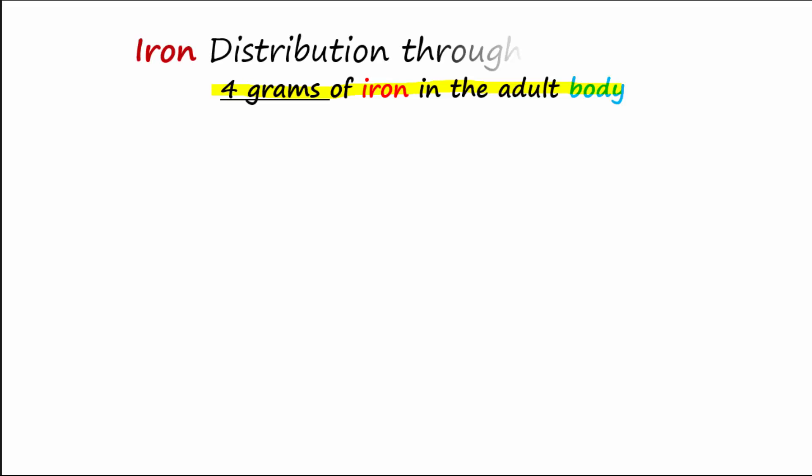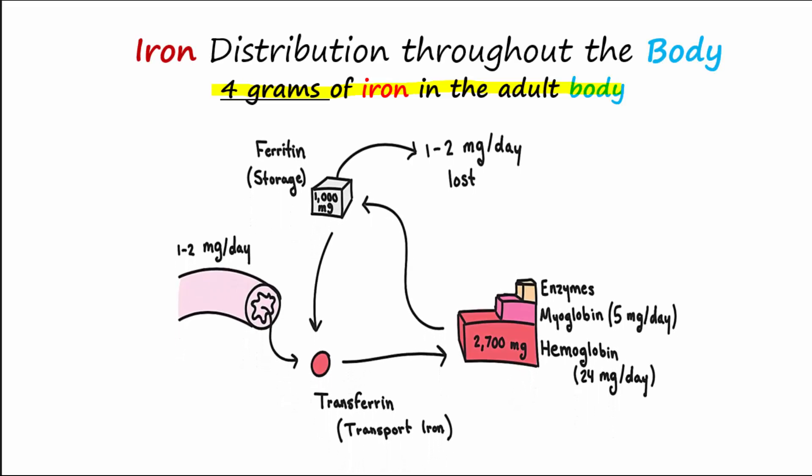At any given moment there are about four grams of iron in the adult human body. How is this iron distributed? Primarily the iron is in hemoglobin, secondarily stored as ferritin in various cells, especially in the liver.